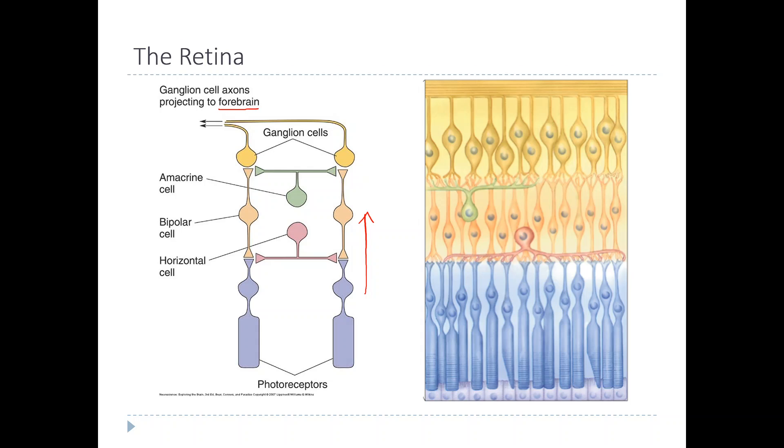These amacrine cells and horizontal cells, their main job is communication within the retina. They allow the horizontal cells to be connected to each other and to some extent the ganglion cells as well.